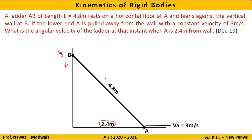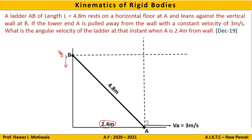The next step is to draw perpendiculars to the velocities. Point A moves horizontally to the right, so the perpendicular is drawn vertically. From point B, the velocity is vertically downward, so the perpendicular is drawn horizontally. These two perpendiculars intersect at a particular point, which we name as the ICR, labeled I. The logic is simple: draw perpendiculars to the velocity at each point on the link, and wherever they meet is your ICR.